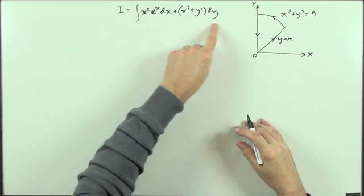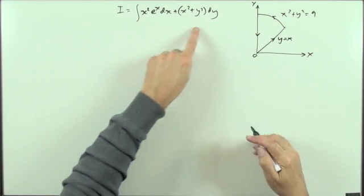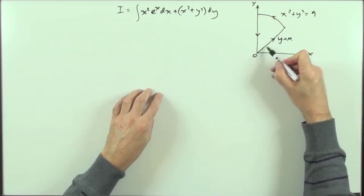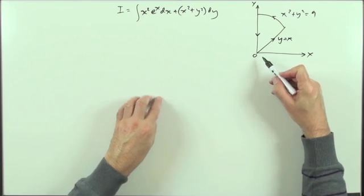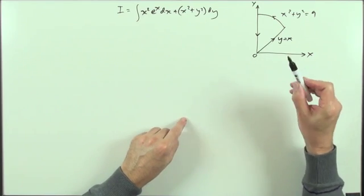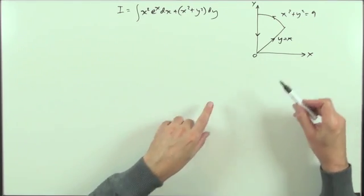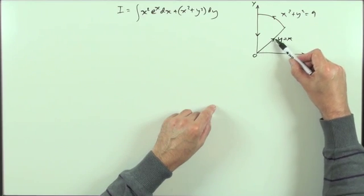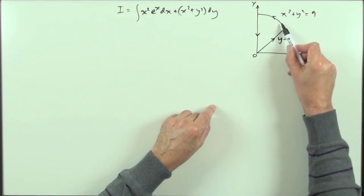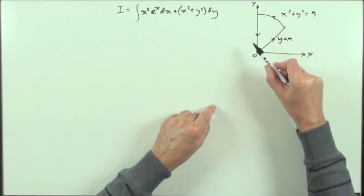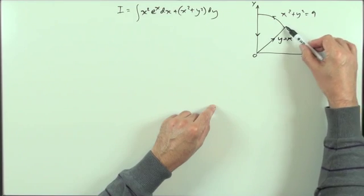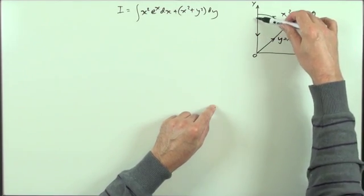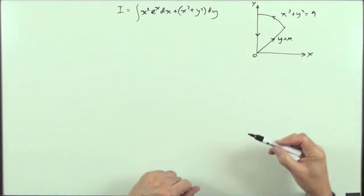What I have here is this integral — evaluating this line integral by travelling along a closed piecewise curve composed of three parts: the line y equals x going from the origin until it hits the circle, the portion of the circle x squared plus y squared equals 9 following that anti-clockwise until it hits the y-axis, and then travelling down the y-axis back to the origin.